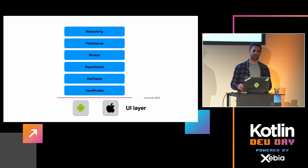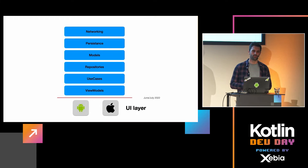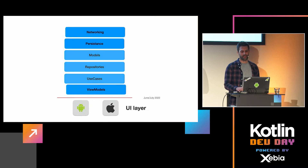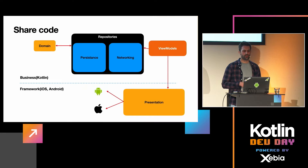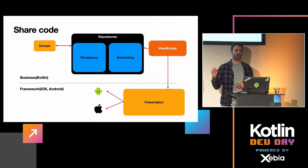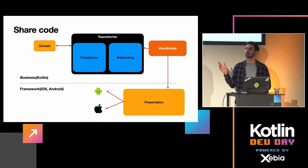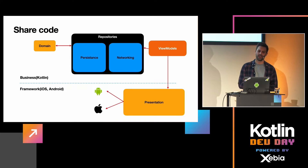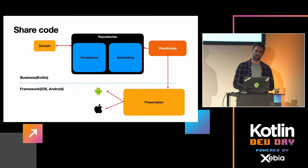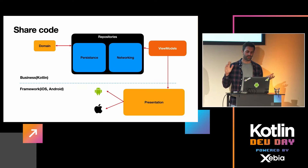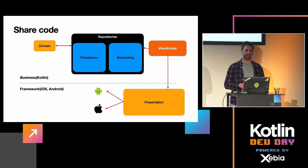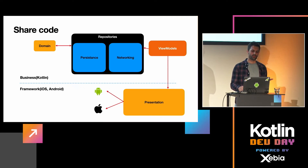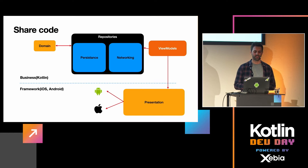We think we'll be ready in production June–July this year. To recap: in the production code we have the domain model, repositories with persistence and networking, some wrappers and mappers, and view models — and then we connect that to the presentation layer on iOS and Android.